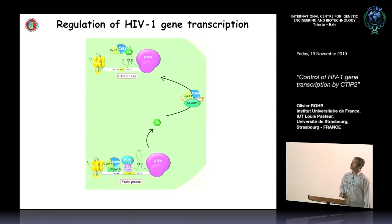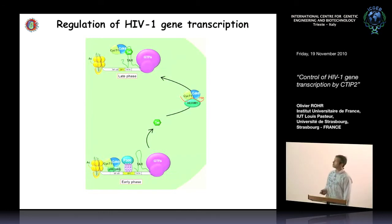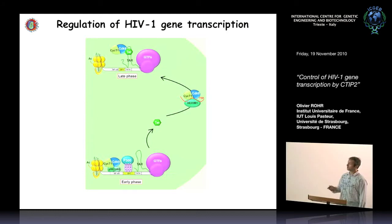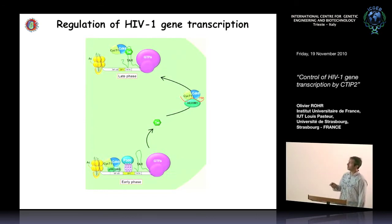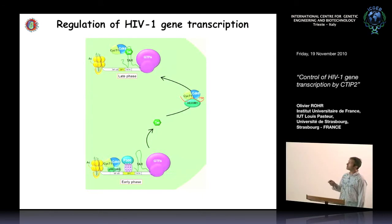To remind you how HIV-1 genes are transcribed: HIV-1 gene transcription occurs in two steps. An early phase belongs mainly to cellular transcription factors that recruit cofactors, involving modification of chromatin structure and formation of small initiated transcripts. The second, late phase belongs mainly to the transactivator Tat protein, which is the viral protein.